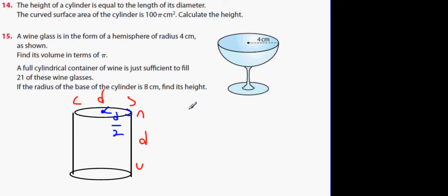Okay so curved surface area which is 2πRH, and that equals 100π. And what happens is the π's will cancel. And what we'll get is 2 times D over 2 times D equals 100.